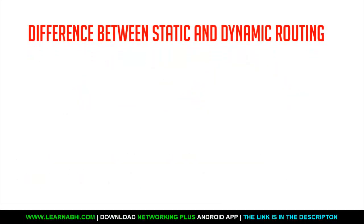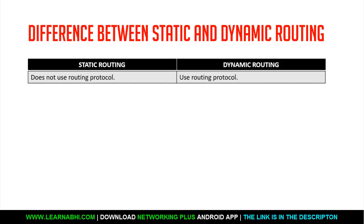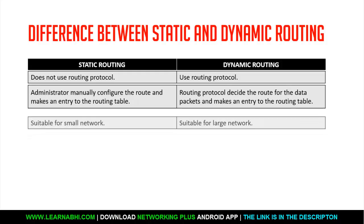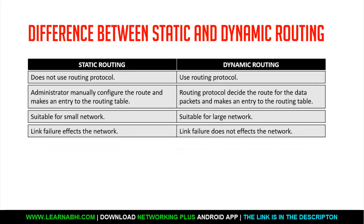Here is a side-by-side comparison between static routing and dynamic routing. Static routing does not use a routing protocol, whereas dynamic routing uses routing protocols. In static routing, the administrator enters the route in the routing table; in dynamic routing, the routing protocol decides the best route and makes the entry automatically. Static routing is suitable for small networks, while dynamic routing is best suited for large networks. In static routing, a link failure affects the entire network, whereas in dynamic routing, a link failure does not affect the entire network because routing protocols can automatically choose an alternate route.